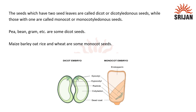Depending on the number of cotyledons, a seed is divided into two categories: monocot seed and dicot seed. The seeds which have two seed leaves or cotyledons are called dicot or dicotyledonous seeds, while those with one are called monocot or monocotyledonous seeds.